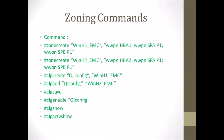Now let's cover the zoning commands, which work on a Brocade SAN switch. The first command is zone create. The syntax is: zone create, then the zone name, then the members. For example: zone create WIN_H1_EMC, then in double quotes the WWPN of HBA 1, WWPN of SPA P1, and WWPN of SPB P1. Then create the second zone: zone create WIN_H2_EMC with the WWPN of HBA 2, WWPN of SPA P1, and WWPN of SPB P1.